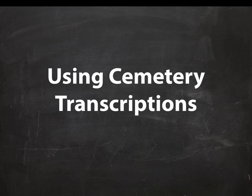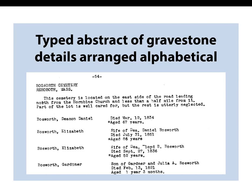Now we're going to talk about different cemetery transcriptions, which vary quite a bit. There are abstracts of gravestone details arranged alphabetically — people are not buried in alphabetical order, but sometimes the transcriber decided to alphabetize rather than create an index. Here from the Rehoboth Cemetery, the Bosworth Cemetery in Rehoboth, Massachusetts, you'll find the family put together in alphabetical order. This is a small cemetery; Daniel, Elizabeth, Elizabeth, and Gardner may all be randomly placed in the cemetery but are arranged here alphabetically. These could be the surviving stones, but there could be other burials as well.